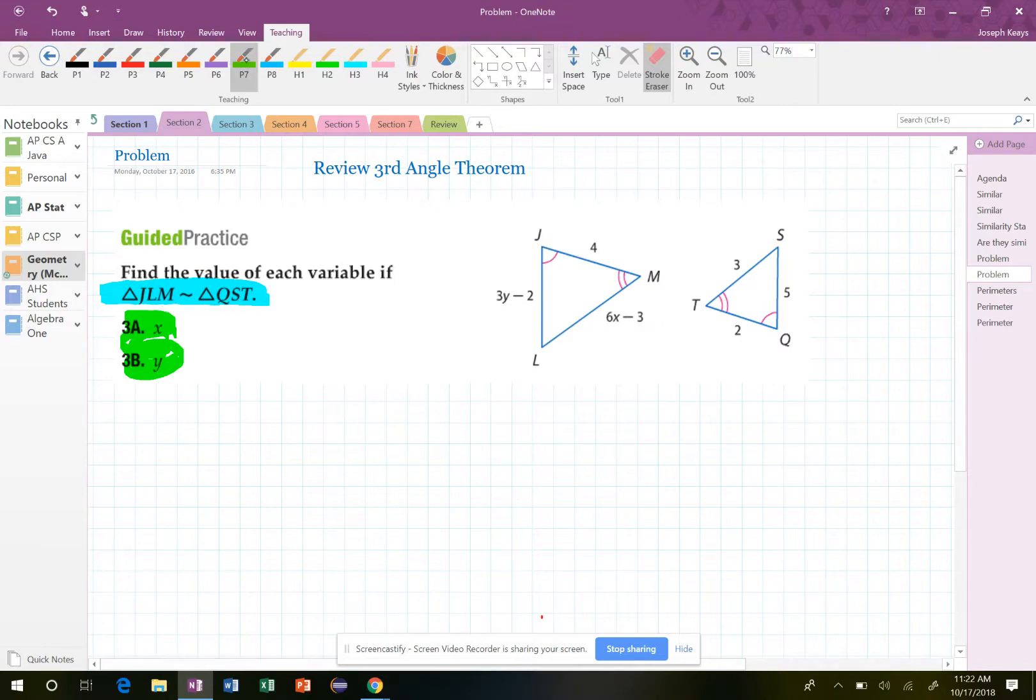So let me look at the first two letters on the left. That's JL. Well, JL is going to match up with QS.